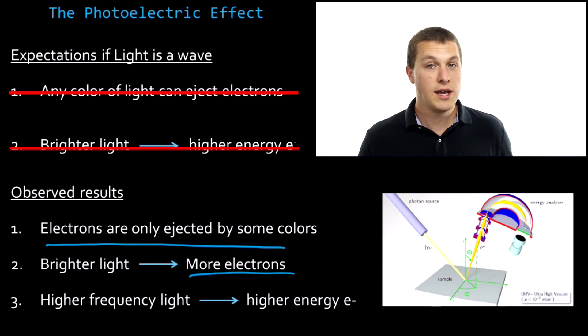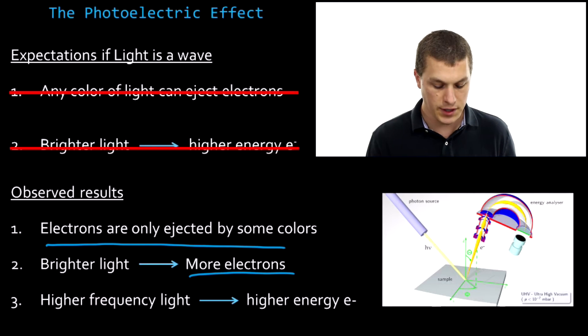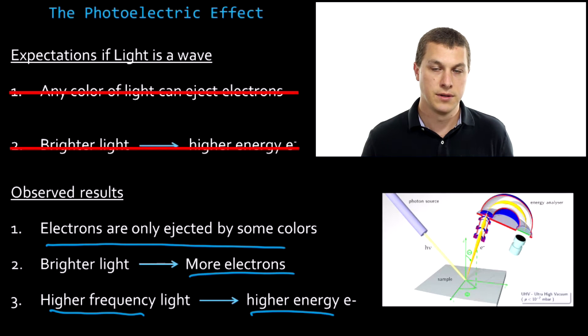The final thing is, if we want to increase the energy of those electrons, we don't change brightness, we change frequency. So higher frequency light did give us higher energy electrons. So when that experiment was first done in the late 1800s, people didn't understand it. And it wasn't until Einstein proposed a solution in the early 1900s that we actually figured out what was going on.